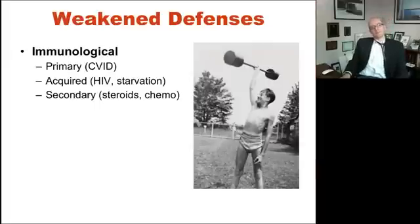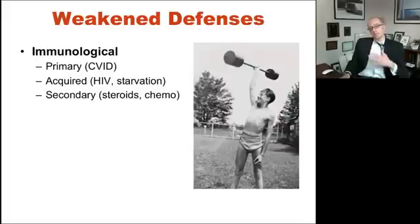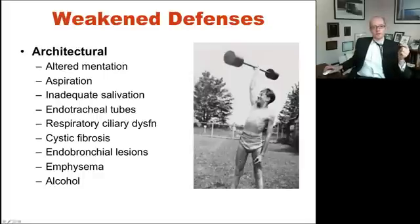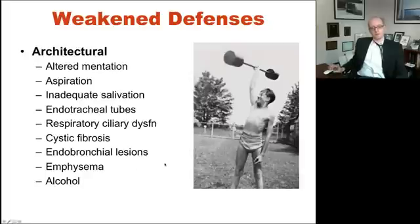What are the weakened defenses that might make somebody susceptible to getting pneumonia? Relatively uncommonly there are things like primary immunodeficiencies. More commonly, HIV and starvation can weaken immune defenses, and sometimes we do this to people — we give steroids or chemotherapy. Perhaps even more commonly, you could be unconscious and not protect your airway, or have a neurological problem that causes aspiration, like multiple sclerosis. All of these things alter the usual defensive architecture and make you susceptible to pneumonia.